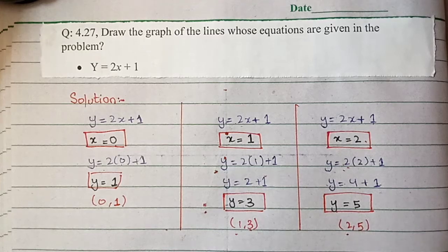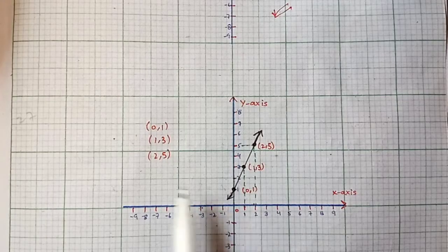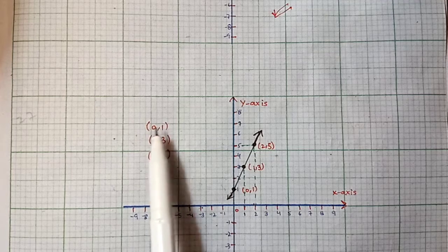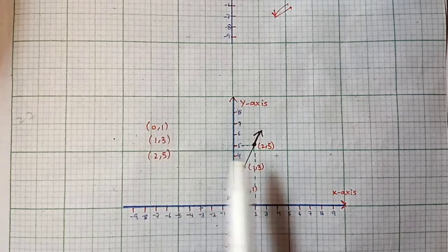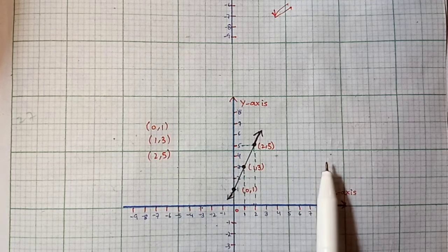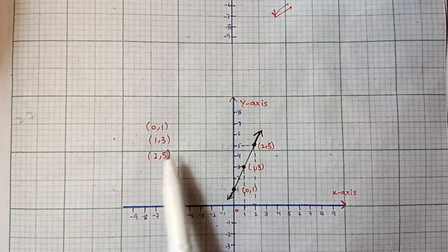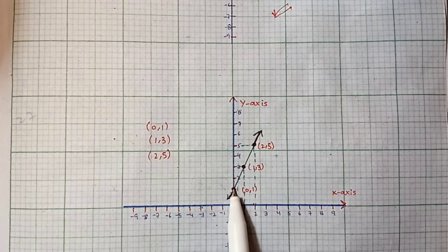After calculating, we have the points to plot. First, we have (0,1) where x = 0 and y = 1. In quadrant 1, we plot this point here.